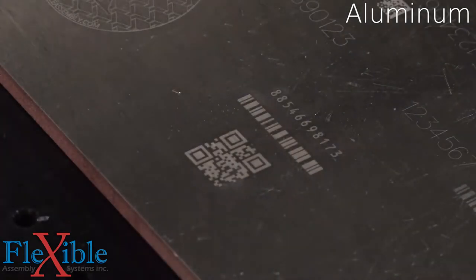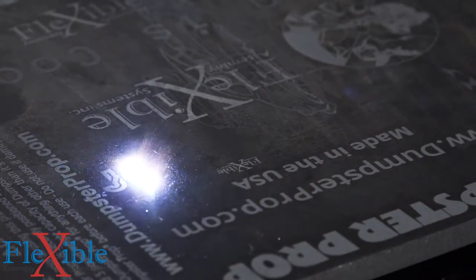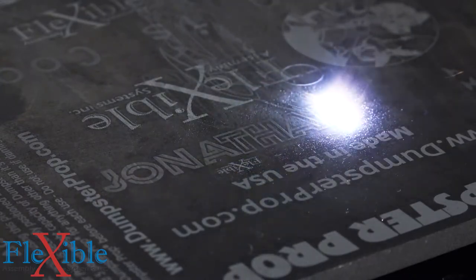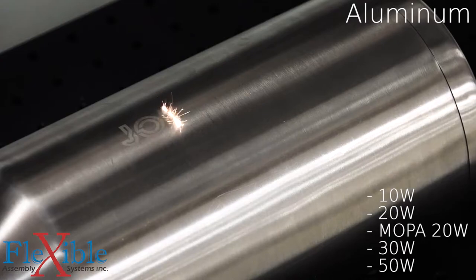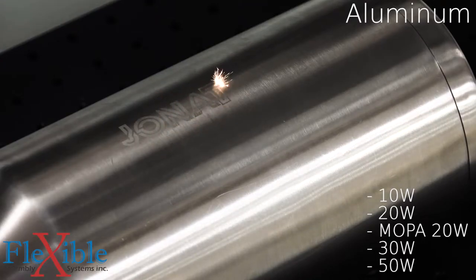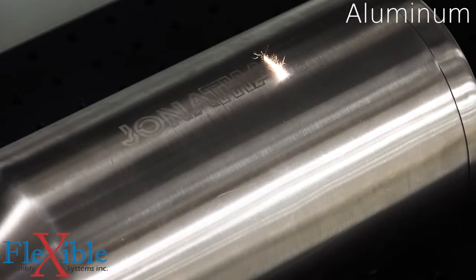The RX has one of the smallest marking head footprints in its class, making it easy to integrate and install in any space. It's available in a 10, 20, 30, or 50 watt model and a special MOPA 20 watt model for extra high contrast marking.